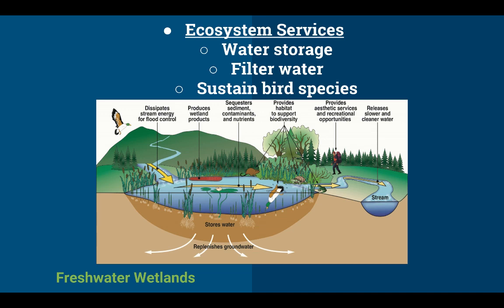Many bird species depend on wetlands for migration or breeding. As many as one third of endangered bird species in the United States spend some part of their lives in wetlands, so as wetlands are drained or built over, those endangered bird populations decline. This biome makes up only 5% of the nation's land area, yet more than half of freshwater wetlands in the US have been drained for agriculture, development, or to eliminate breeding grounds for mosquitoes and other disease organisms.